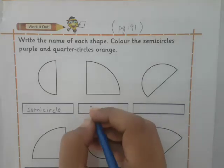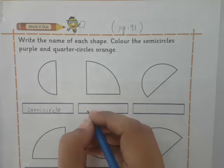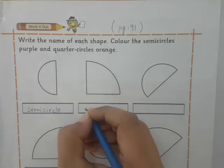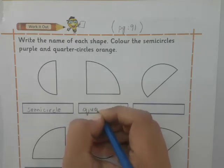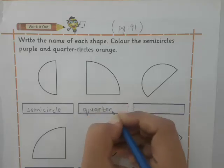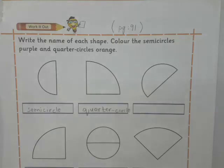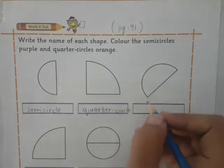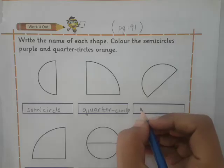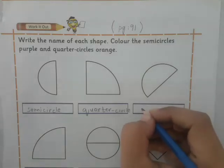Do you know the spelling of quarter circle? It's Q-U-A-R-T-E-R, quarter, C-I-R-C-L-E, circle. Quarter circle. What is the next one shape? Yes, good, it's semicircle.